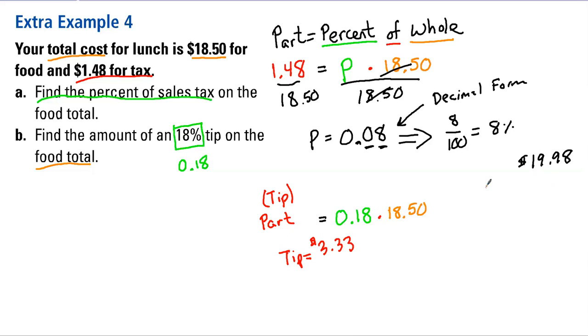Now, going back to, so that answers that question. So the amount of the 18% tip. So for part B here, it's $3.33.